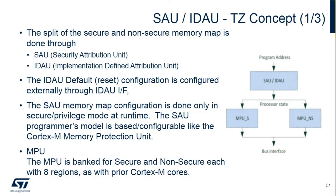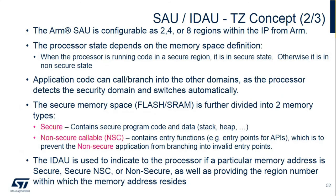Going a little deeper into the SAU and the IDAU: when ARM allows the SAU to be configurable, this is at the HDL level. The STM32L5 is built so that the SAU has eight regions, giving us the most diversity. There are two states when the TrustZone is enabled: secure and non-secure. The M TrustZone can branch directly because of direct memory mapping. The IDAU limits where things go with the help of the SAU. The IDAU is configured as a default — if you don't do anything, you get that default — but you can override it with the SAU.